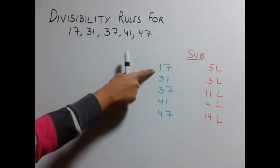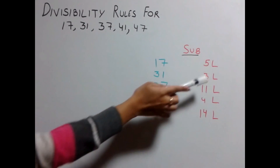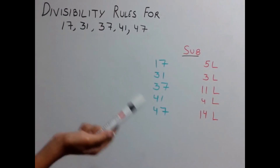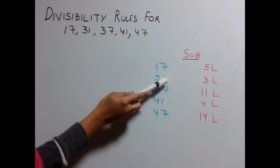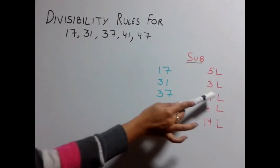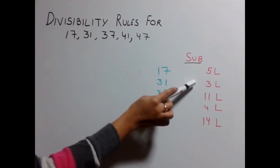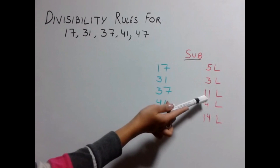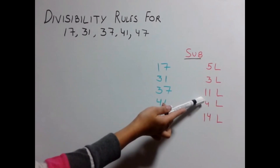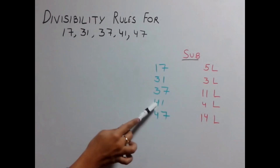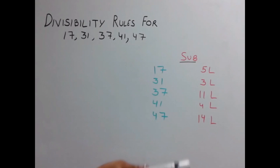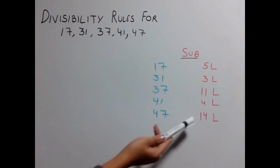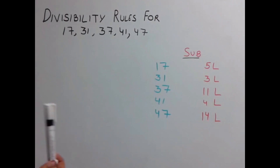To find out divisibility by 17, multiply the last digit by 5 and subtract it from the remaining number. For 31, multiply the last digit by 3 and subtract. For 37, multiply the last digit by 11 and subtract. For 41, multiply the last digit by 4 and subtract. And for 47, multiply the last digit by 14 and subtract.